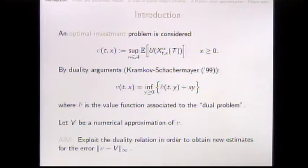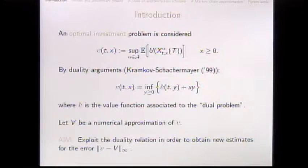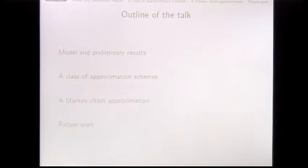If we imagine having a numerical scheme that provides a numerical approximation of v, which I call capital V, we would like to obtain error estimates for the difference between v and capital V using further information from duality theory. In my talk, I'll present the model, describe the main idea on a general class of schemes, detail a particular Markov chain approximation scheme, show the resulting error estimates, and then discuss further directions.